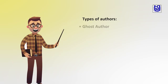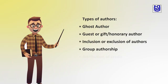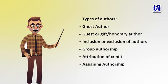Types of authorship include ghost authorship, which is very important because some people write an article under a different name. There is also guest or gift honorary authorship, inclusion or exclusion of authors, group authorship, and activity shifts or assigning authorship. These are things we all need to know about and understand how they should be handled.